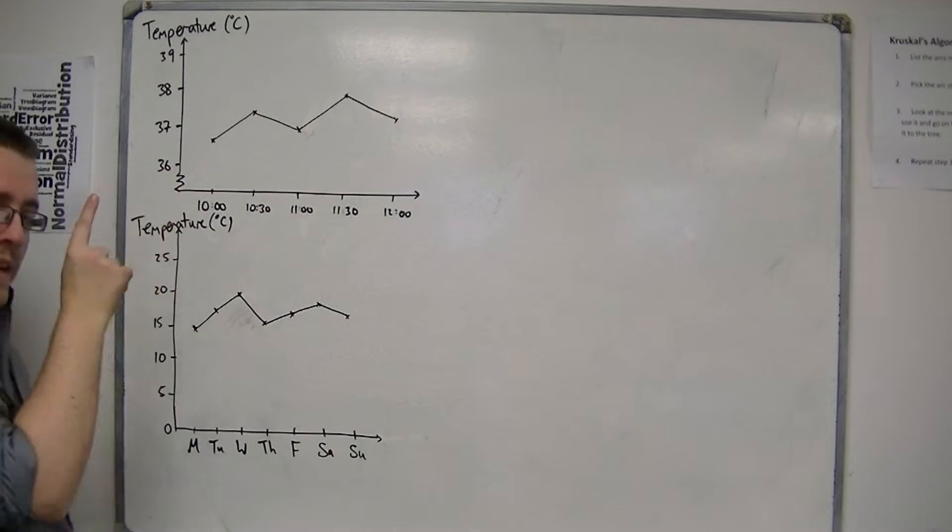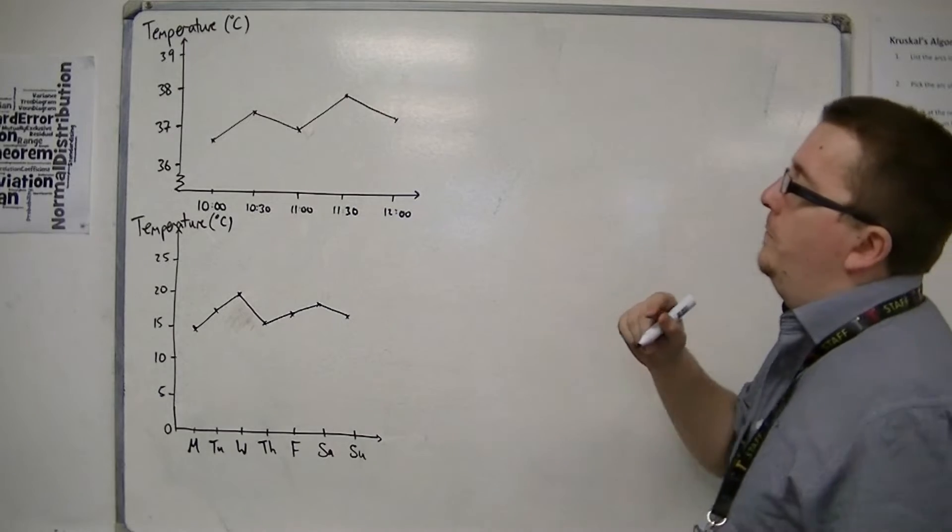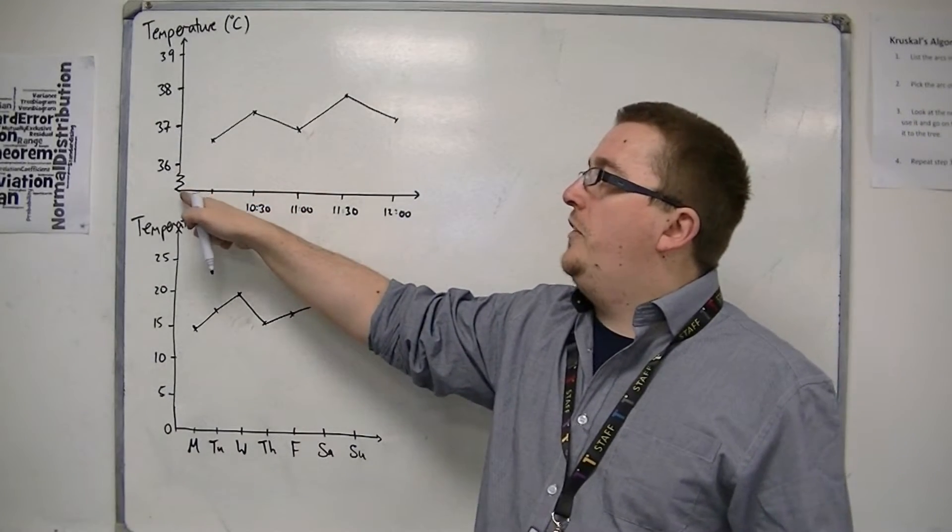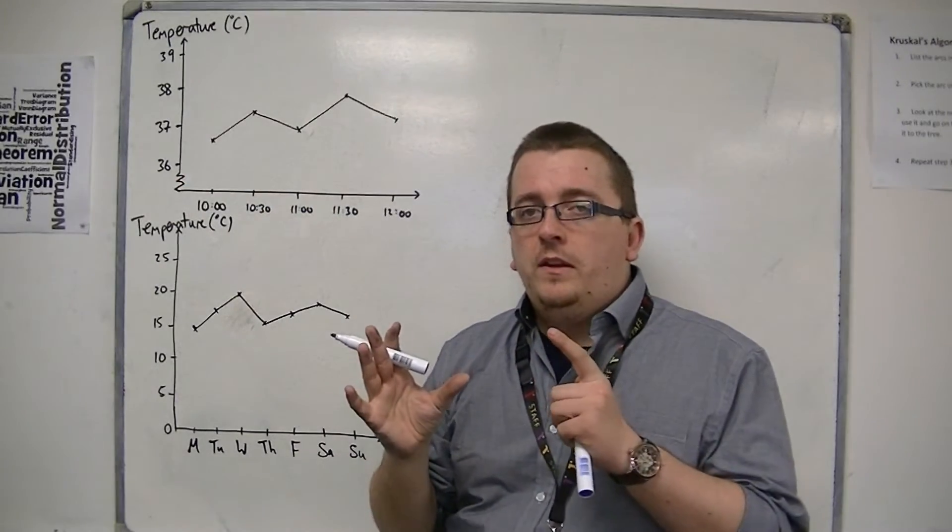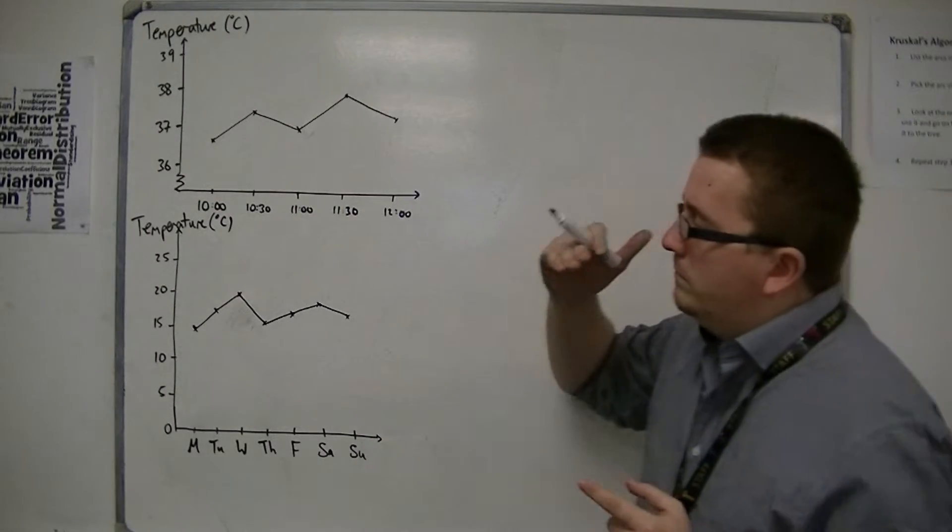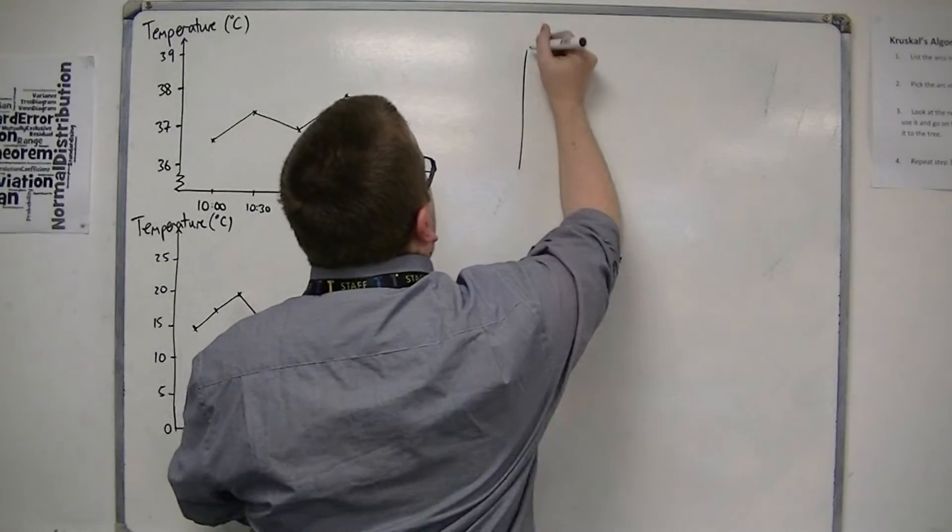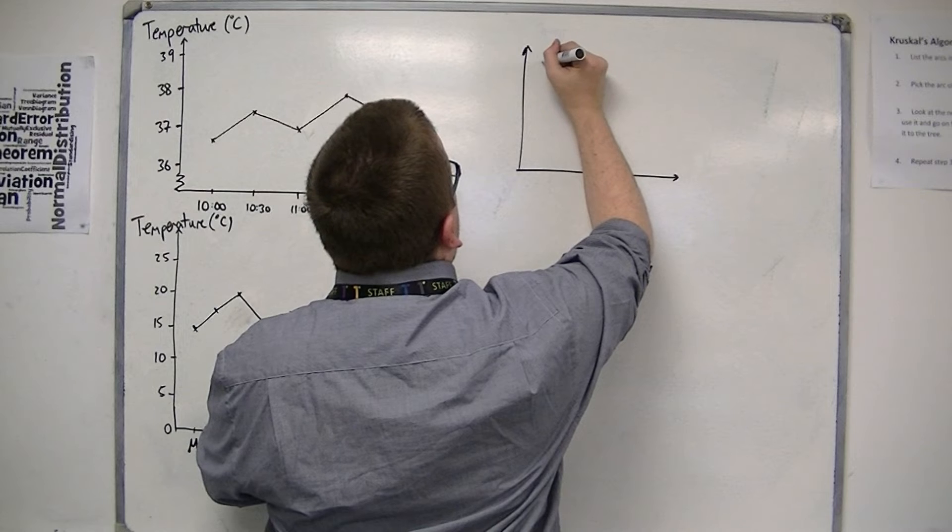And notice we've got this little jagged line. What that allows you to do, if you've never seen it before, is it allows you to skip out all those numbers between 0 and 36 and just start at 36. So that you don't have a graph that is... for example, if you didn't have that, your line graph might look like this.